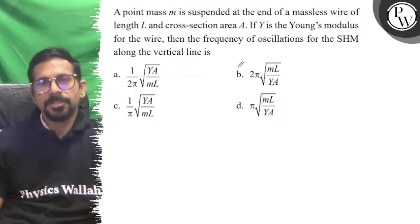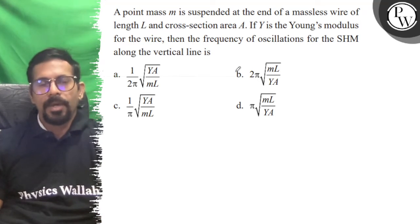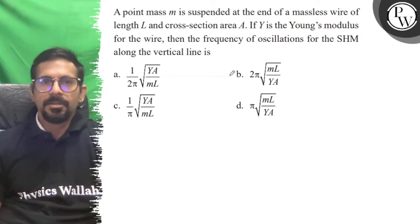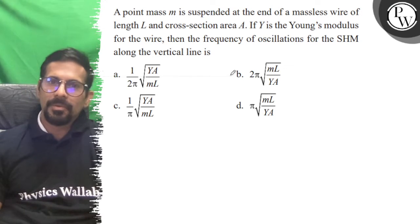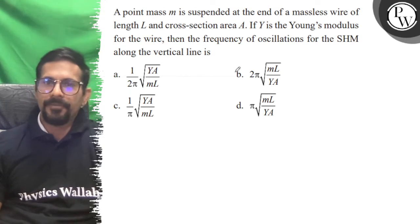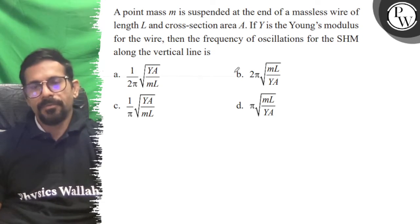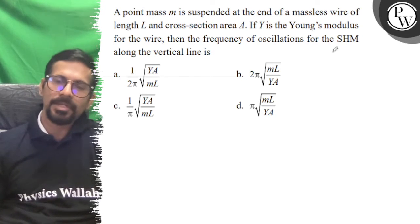Hello, let's see the question. A point mass m is suspended at the end of a massless wire of length L and cross-sectional area A. If Y is the Young's modulus for the wire, then the frequency of oscillation for the SHM along the vertical line.